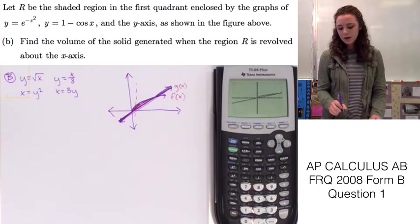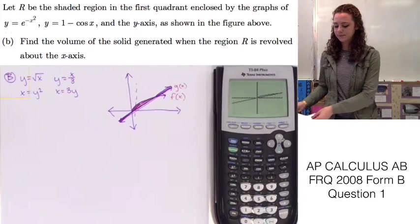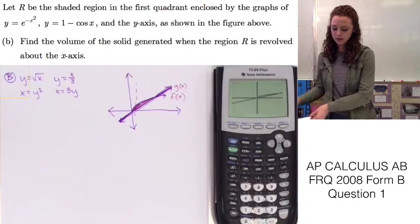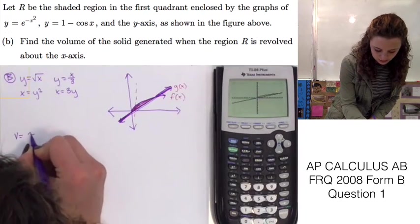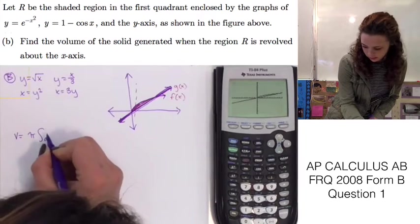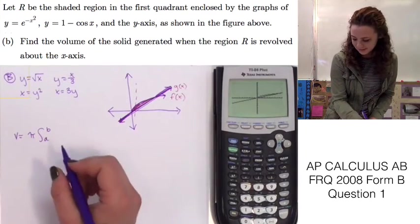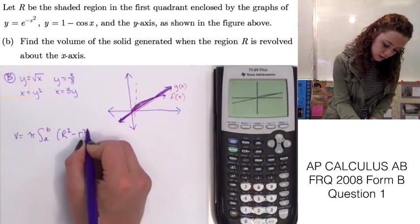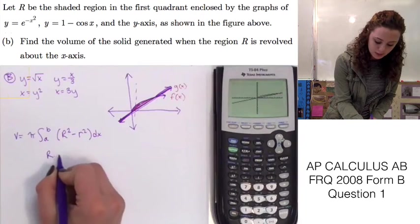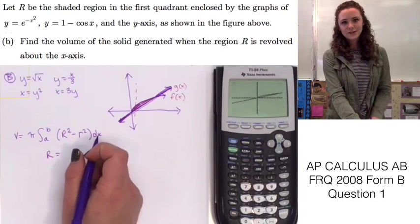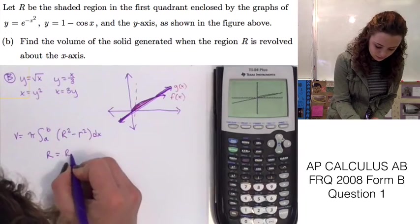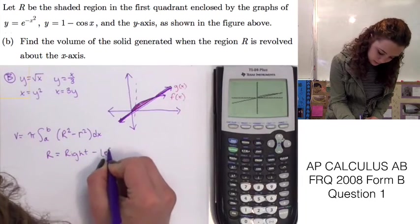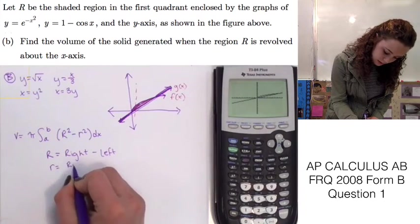Now that we know those, let's go ahead and put our function for finding the volume using the disk method, which is V equals pi times the integral of A to B of big R squared minus little r squared. We know that the big R is right function minus left function, since we're rotating around the y-axis. And little r is also right minus left.